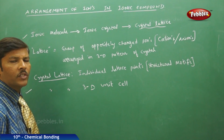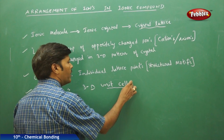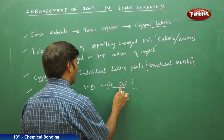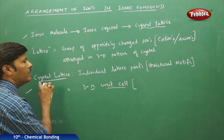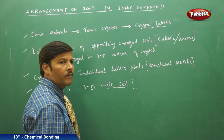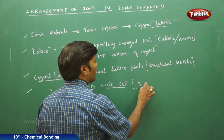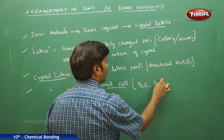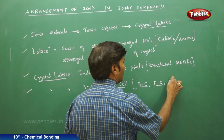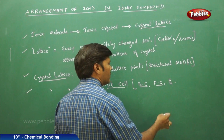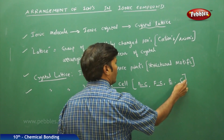A three-dimensional unit cell, when viewed as a crystal lattice, has four different types of lattice points: BC (body center), FC (face center), E (edges), and C (corners).